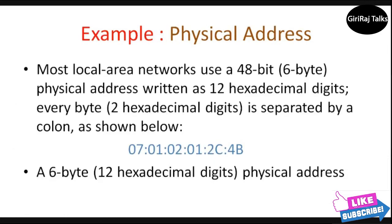The data part is decapsulated and delivered to the upper layer. For example, most local area networks use a 48-bit physical address, written as 12 hexadecimal digits. Every byte has two hexadecimal digits, separated by a colon, as shown: 07:01:02:01:2C:4B — a 6-byte, which means 12 hexadecimal digits, physical address.